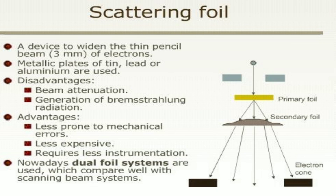A scattering foil is used to widen the thin pencil beam of electrons. Metallic plates of tin, lead, and aluminum are used. Disadvantages include beam attenuation and generation of bremsstrahlung radiation. Advantages include being less prone to mechanical errors, less expensive, and requiring less instrumentation. Nowadays, dual-foil systems are used which compare well with scanning beams.